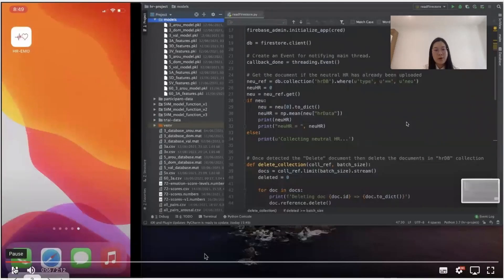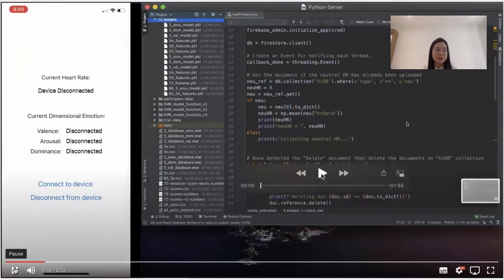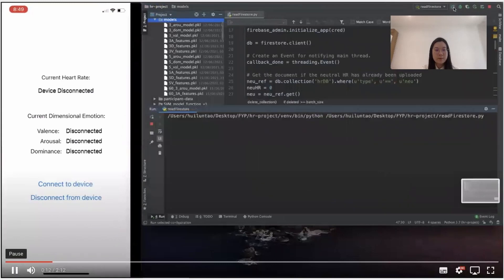Now let's have a look at a quick demo of the simple app. So this video was recorded while I was wearing the smart device, and the Bluetooth was connected between my phone and the armband. So in this demo, it's using my heart rate and predicting my dimensions of emotion in real time.